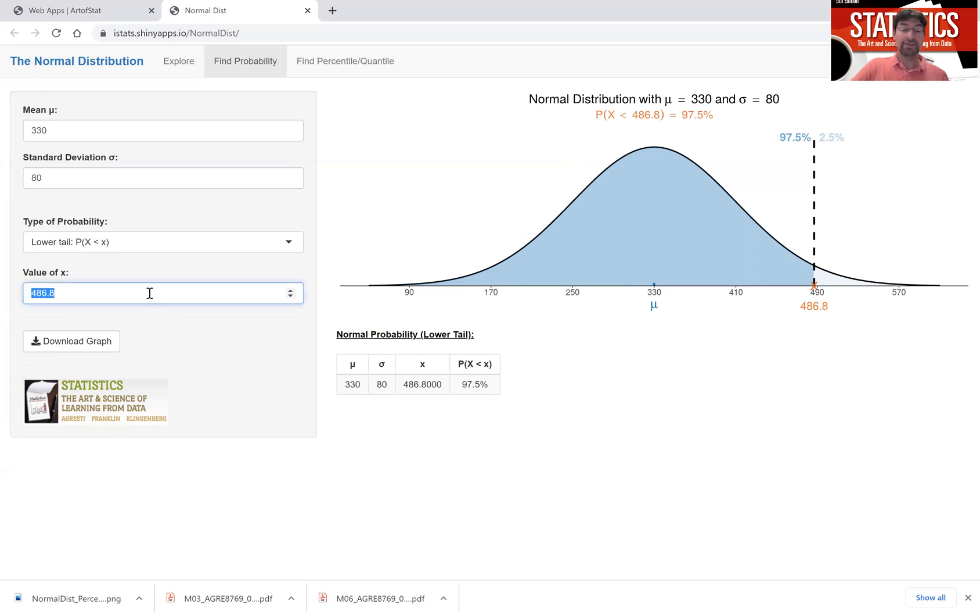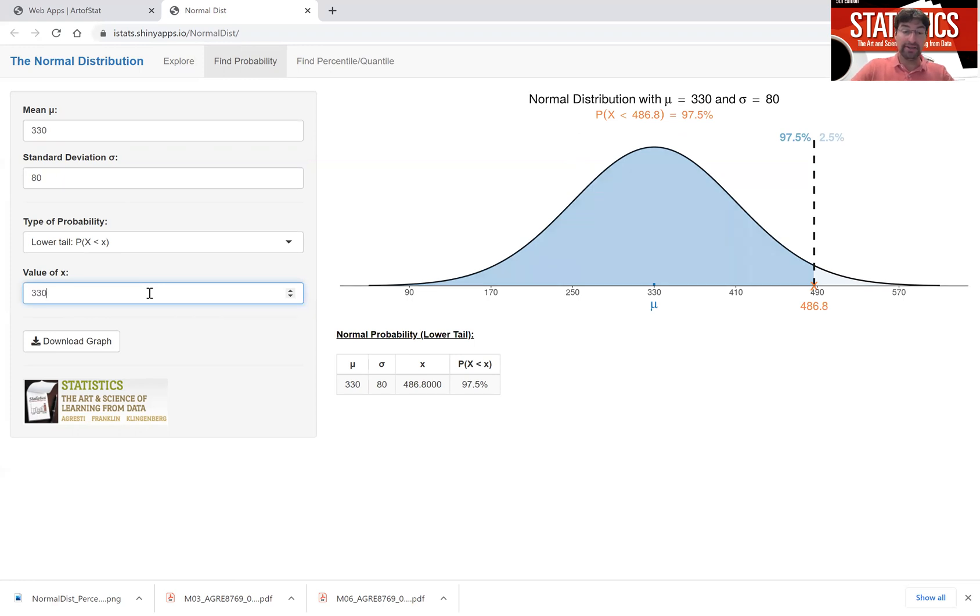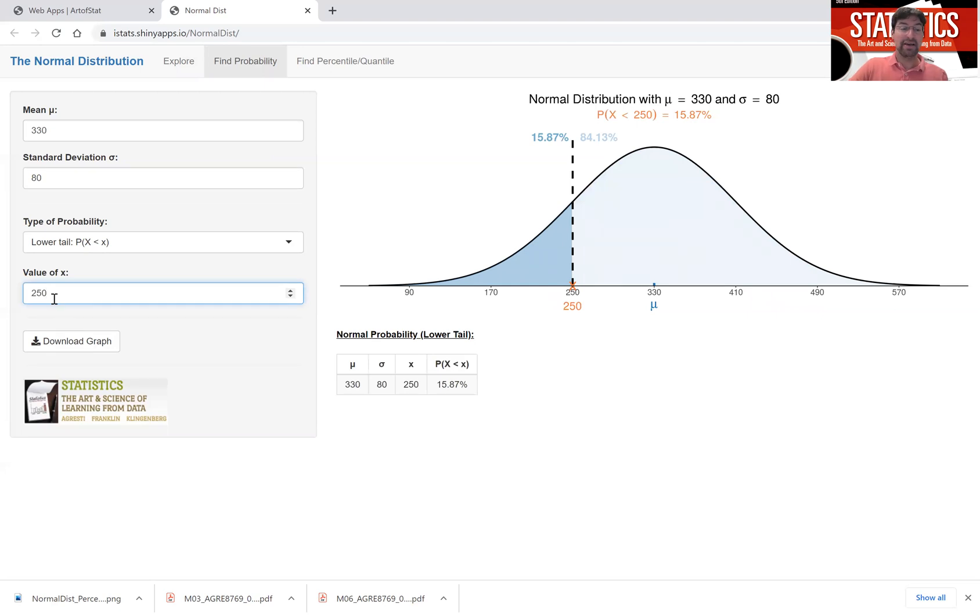Now I could ask you what is the probability of the talk time being less than 330, that's exactly the mean, and you should have guessed that that probability is 50% by symmetry. I could have even asked you what is the probability of getting a talk time that is less than 250 minutes. And what I just told you before, you should have been able to guess that it's roughly 16%. Remember we have 68% within one standard deviation.